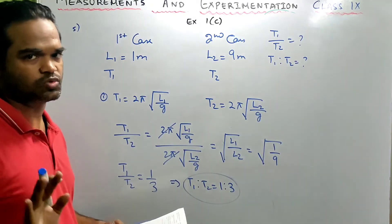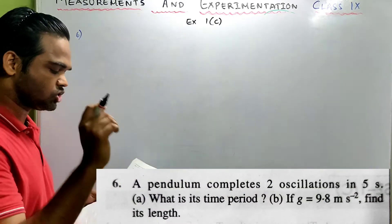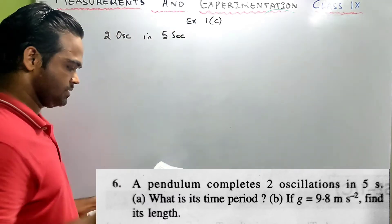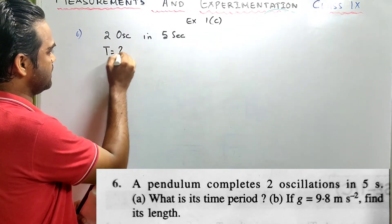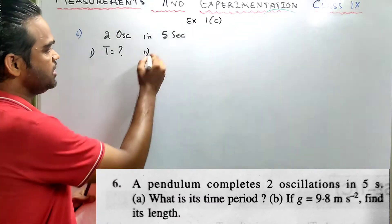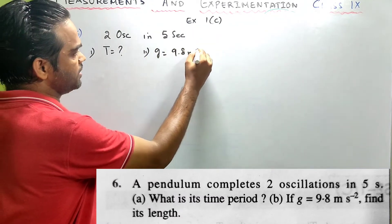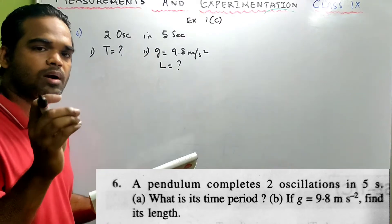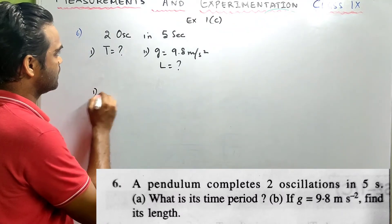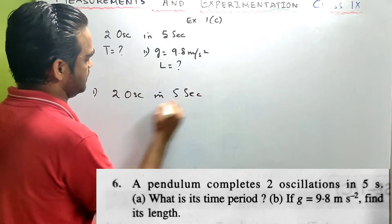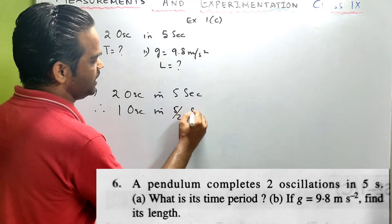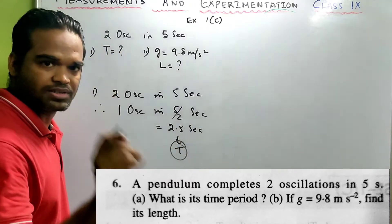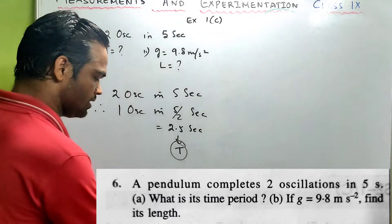Sum number 6: a pendulum completes 2 oscillations in 5 seconds. What is its time period? Time period is the time taken to complete 1 oscillation. 2 oscillations in 5 seconds, therefore 1 oscillation in 5/2 = 2.5 seconds. And this is your time period.